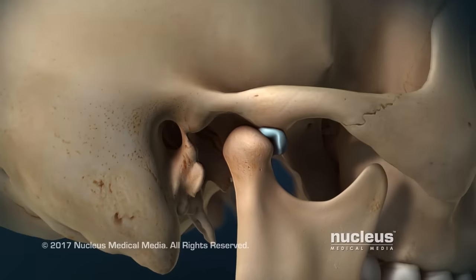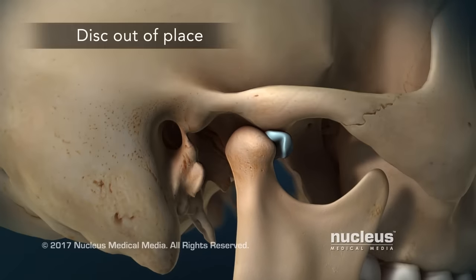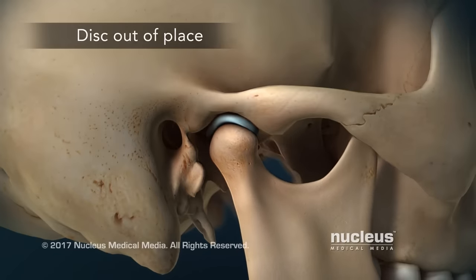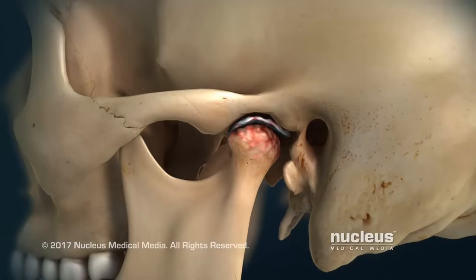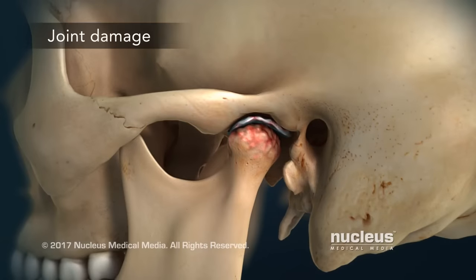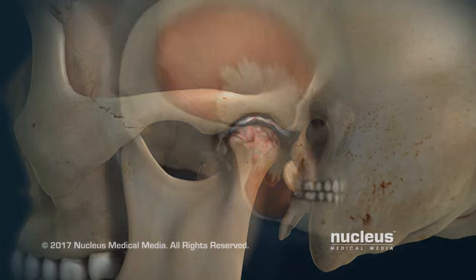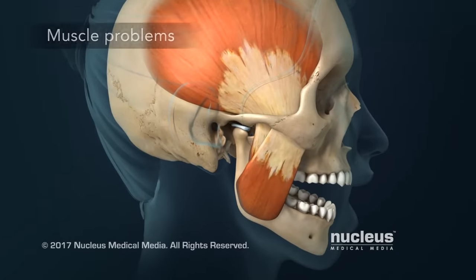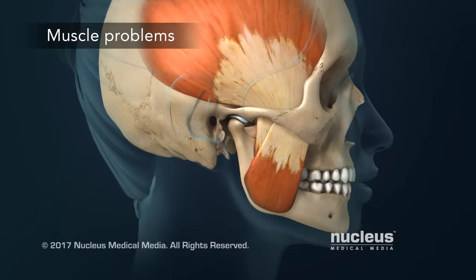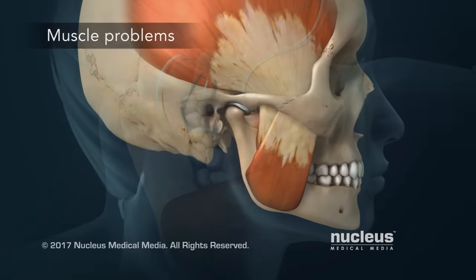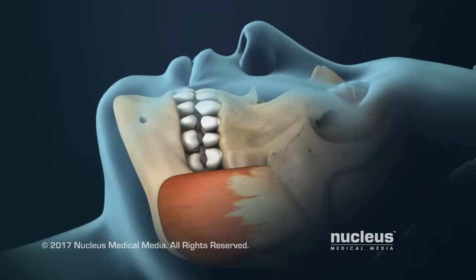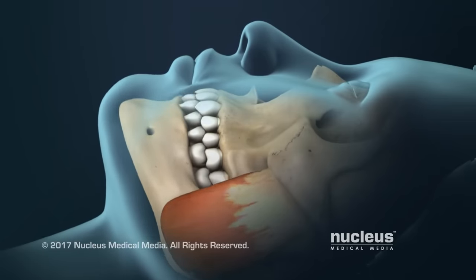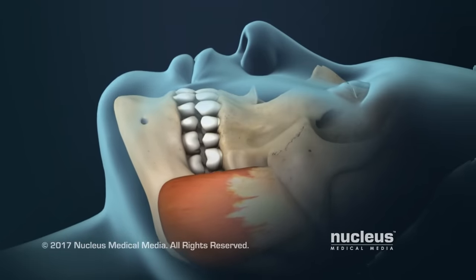In one type of TMJ disorder, your disc may move out of place. In a second type, your joint can be damaged by medical problems like arthritis, where your joint becomes inflamed and breaks down. And in a third type, you may have painful spasms in your jaw muscles. Other health problems, such as grinding your teeth at night, can also cause symptoms in the joint.